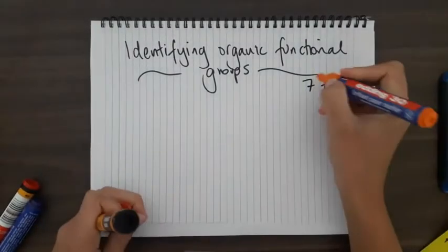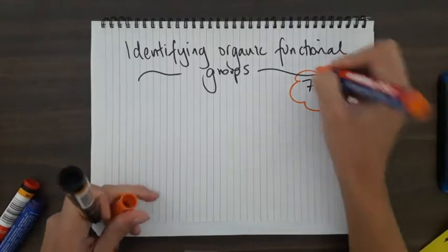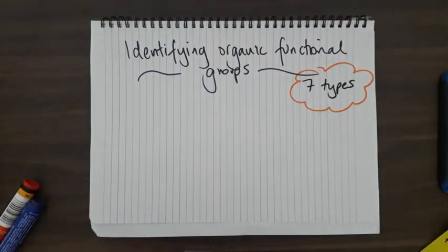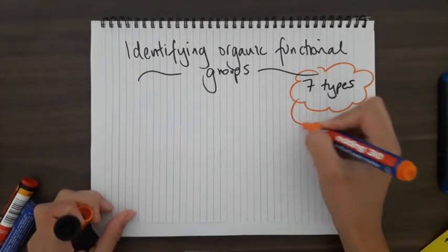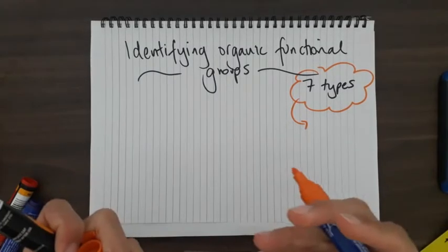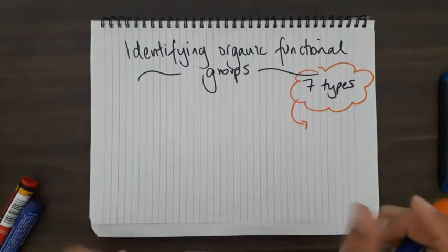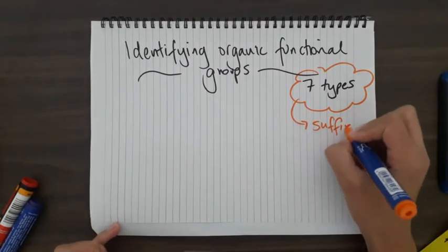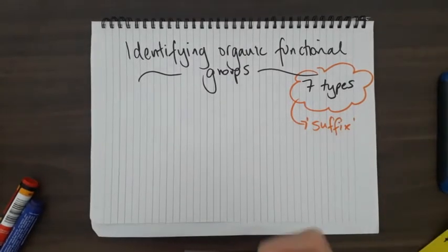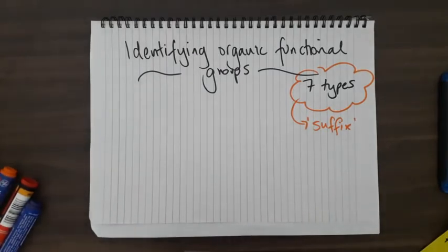We'll go through each of them just so you can refresh your memory. You'll get really good at identifying them. With the functional groups, they can help give the part of the name that comes at the end, the suffix of the name of a molecule. But we're not going to name anything, we're just going to look at the types of functional groups.